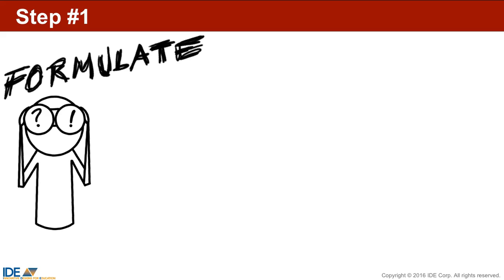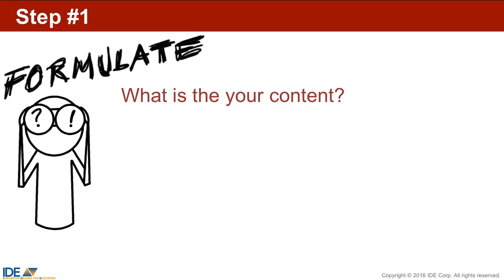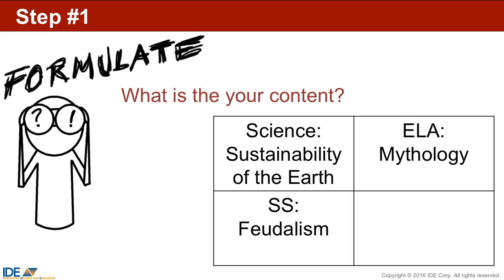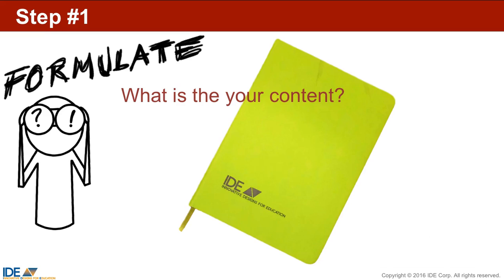First, formulate your problem — what is it you're trying to accomplish? Perhaps the real-world authentic need to propel your students to new achievement heights. So what is the content for a 4-5 week chunk of time in your curriculum? Just looking at the four core subjects in this video, it might be Earth's Sustainability and Human Impact, Mythology, Feudalism, or 3D Geometry. In your design journal, which may be paper or digital, write down the major topics you want to cover, then the standards and more learning objectives. Get a good sense of the content you wish to cover.